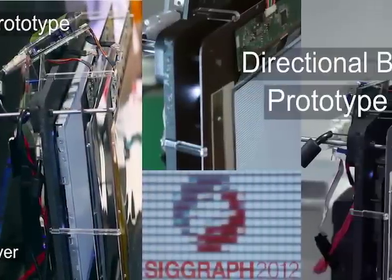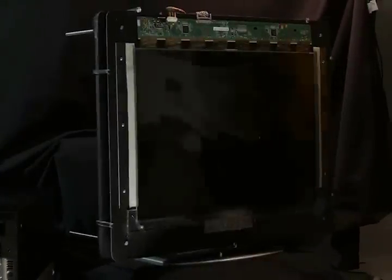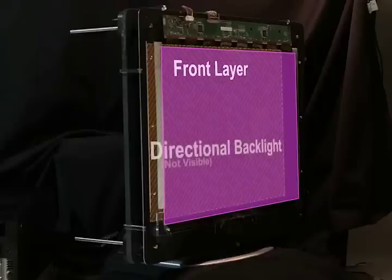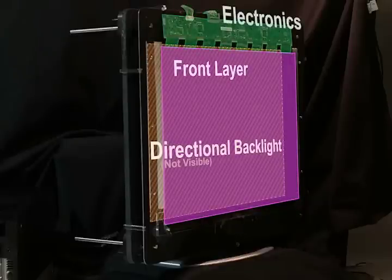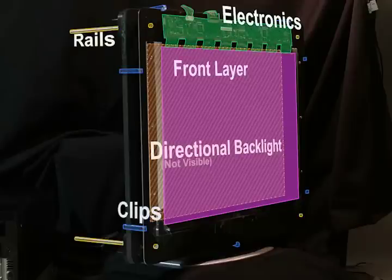Our prototype is constructed using off-the-shelf hardware to demonstrate the near-term applicability of our approach. The prototype is assembled in the directional backlight configuration. The front LCD layer sits atop a directional backlight. The LCD driver electronics are mounted with the panel on an aluminum plate. The plate is accurately positioned using a rail and clip system.